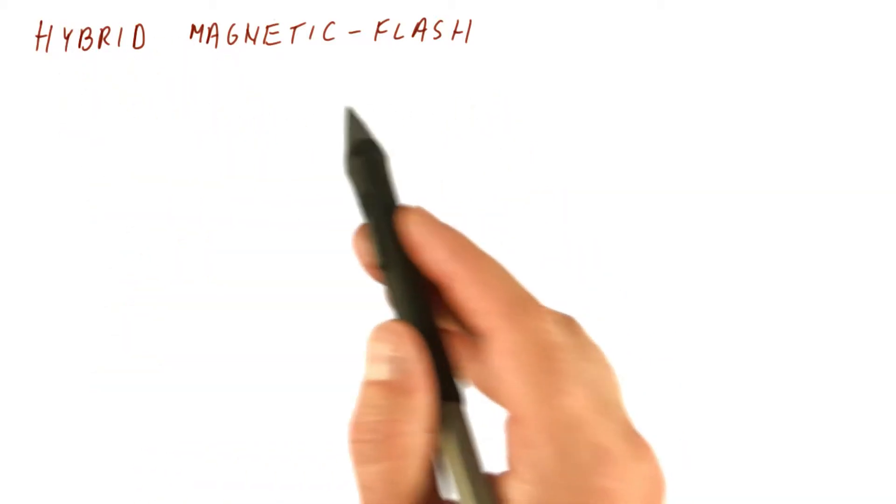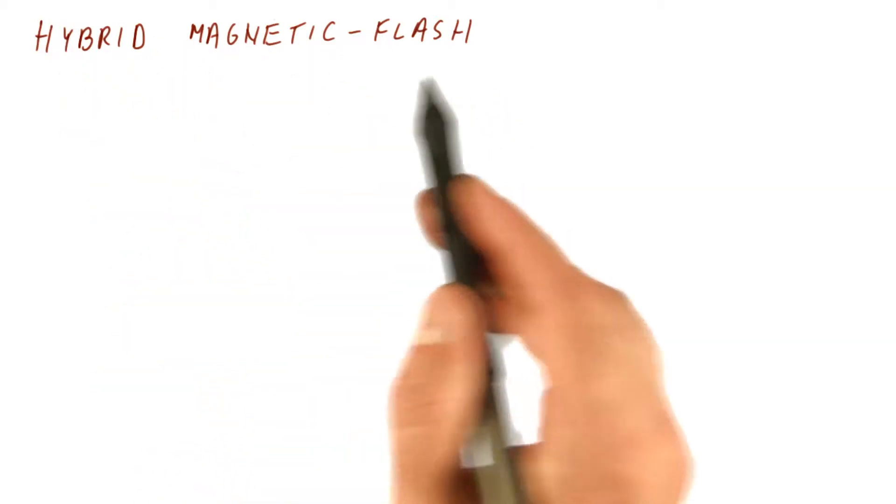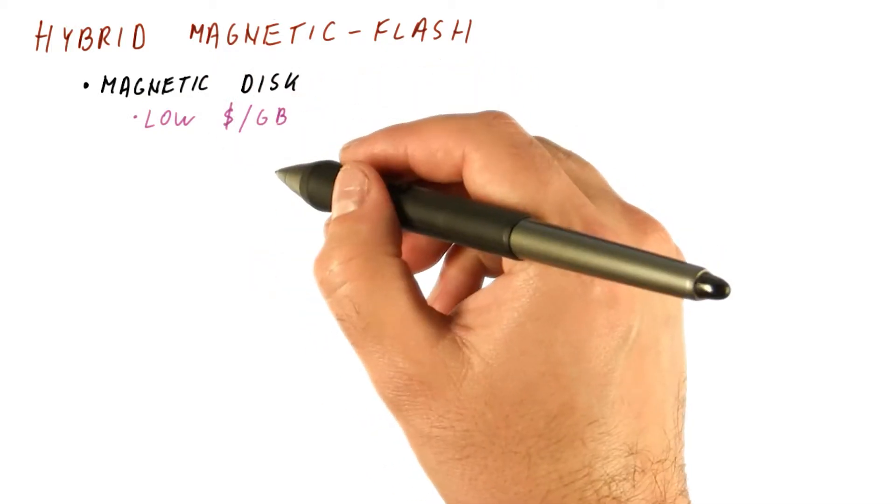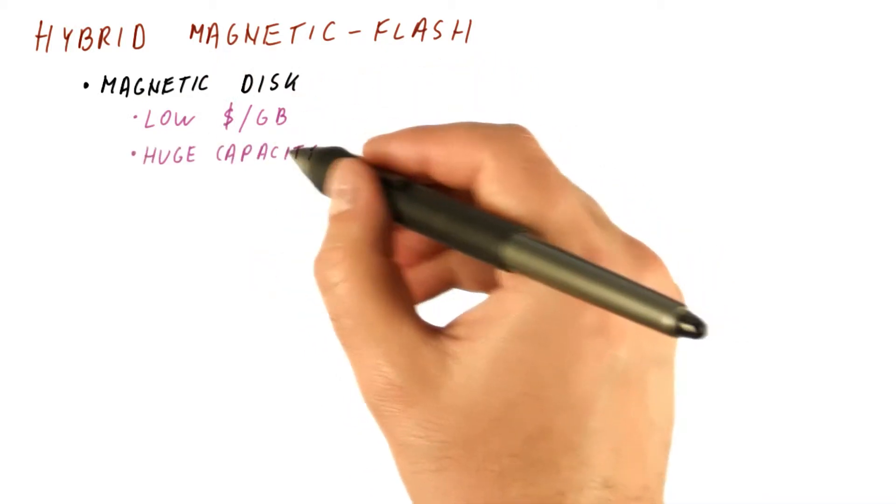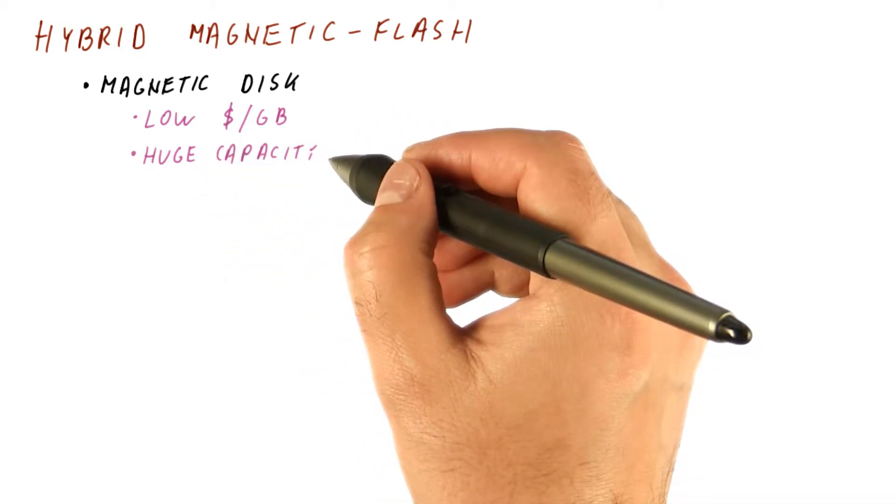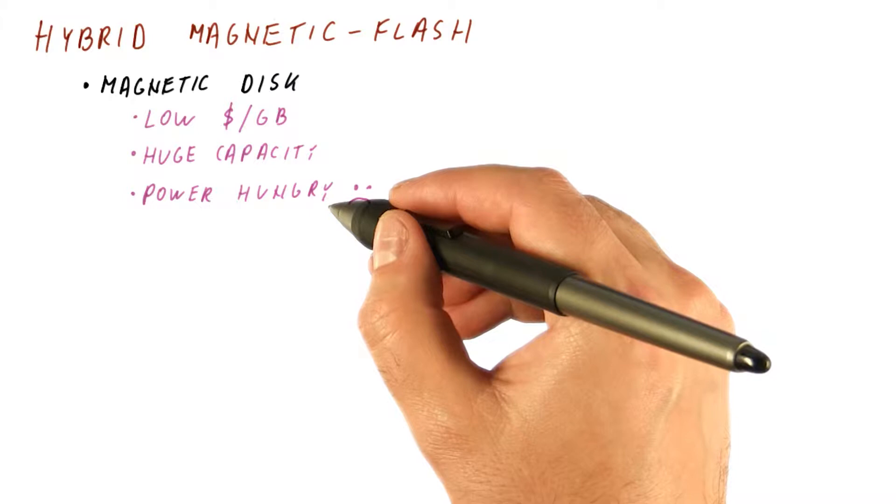One very popular approach is to combine magnetic disks with flash. Magnetic disks are very cheap per gigabyte compared to flash. We know how to build huge capacity magnetic disks in a relatively small package, but they're very power hungry.